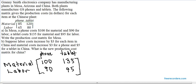And that's all it's asking you to do in Part A. Part B says, suppose labor costs increase by $3 for each item in China. So, it's talking about this matrix here. This is the China matrix.